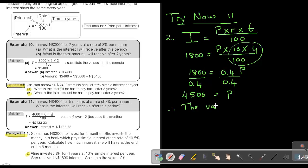So therefore, the value of P is 4,500. And that's my answer.